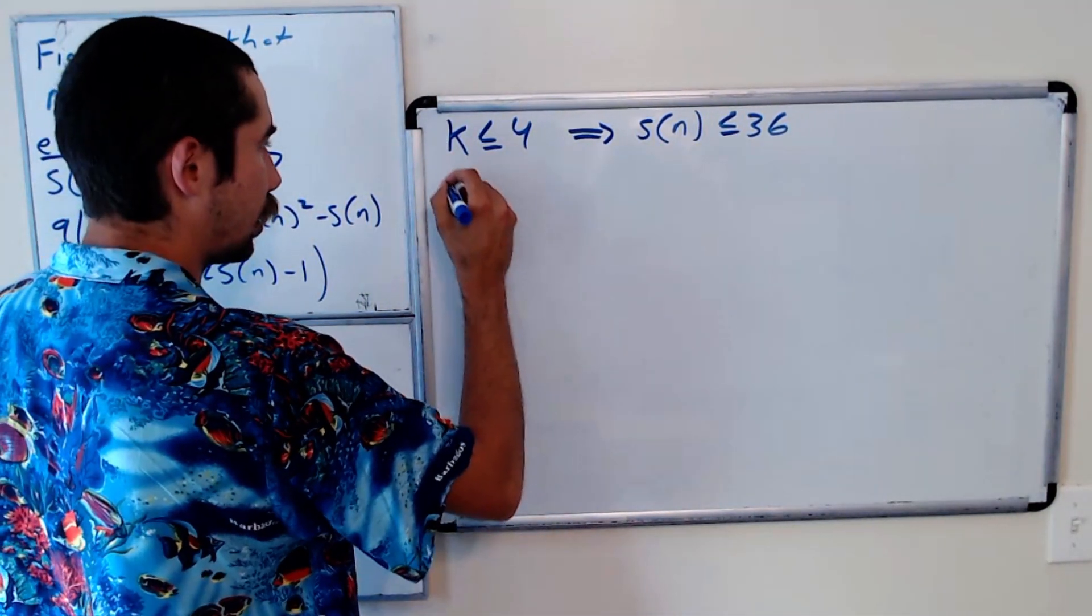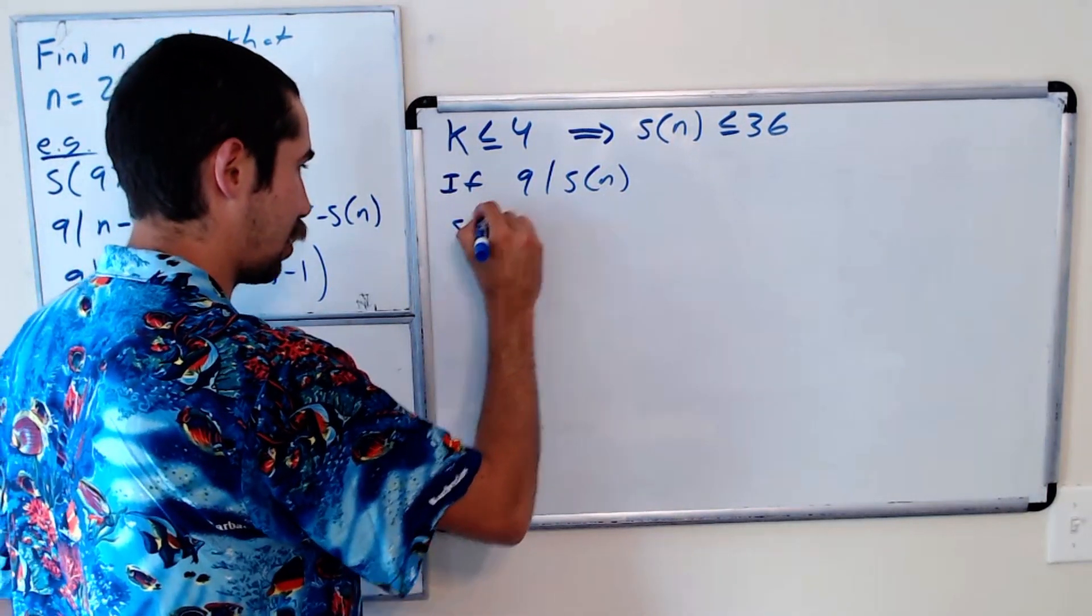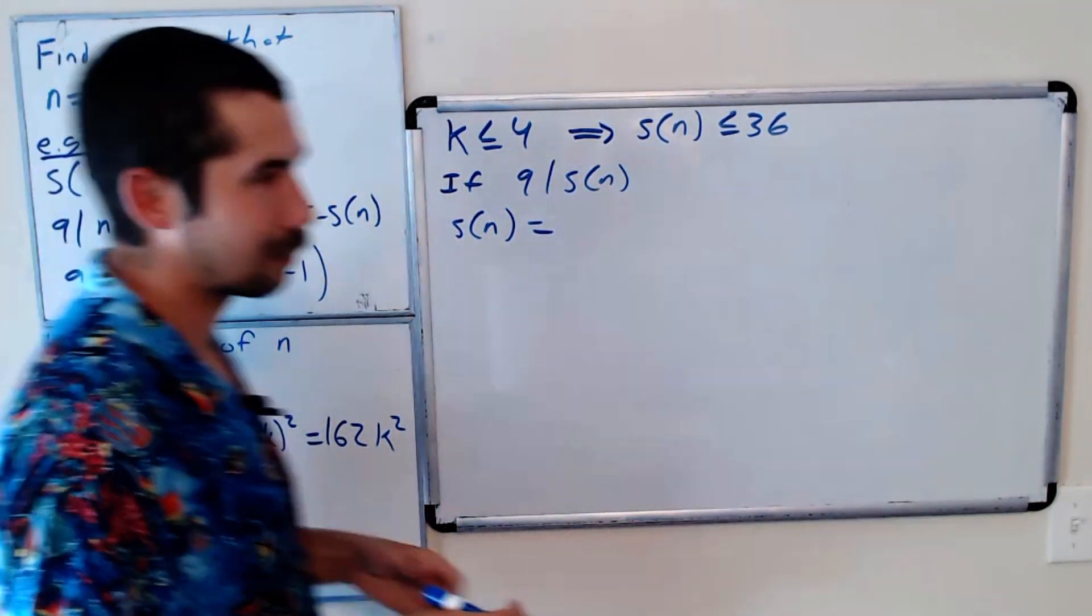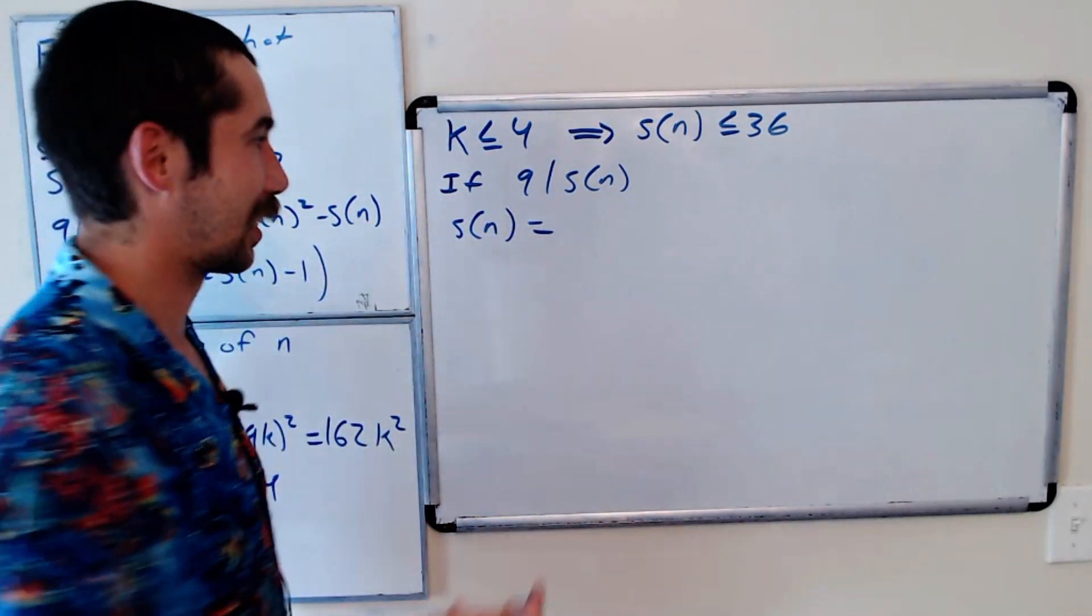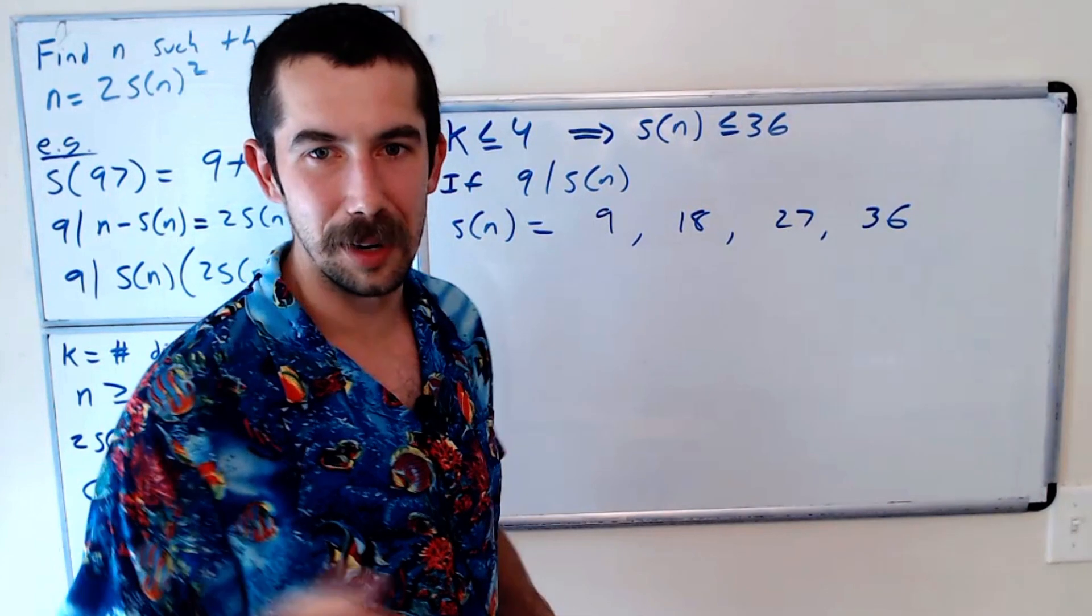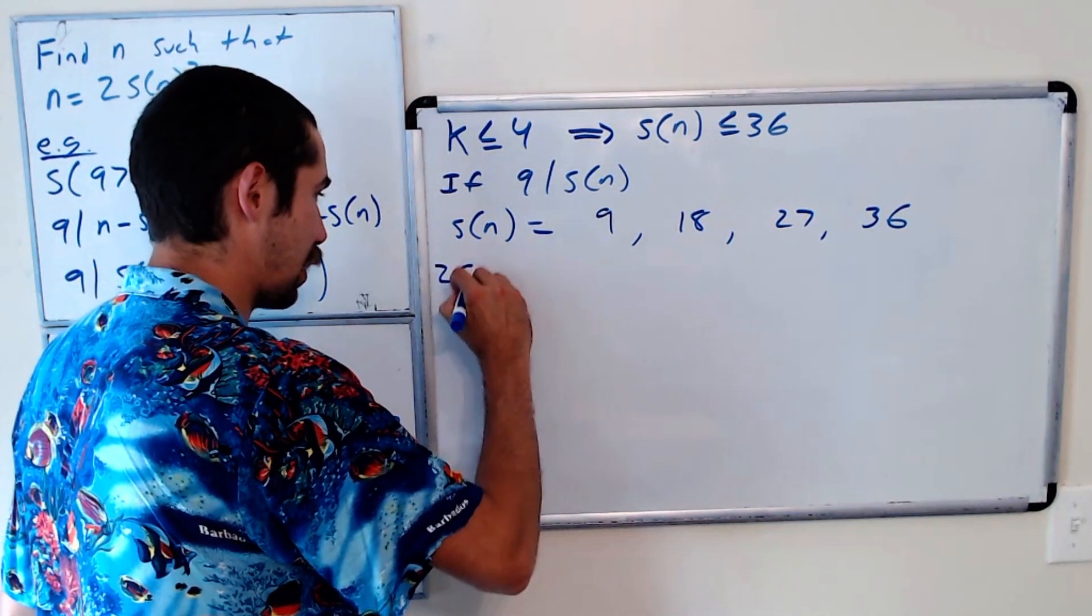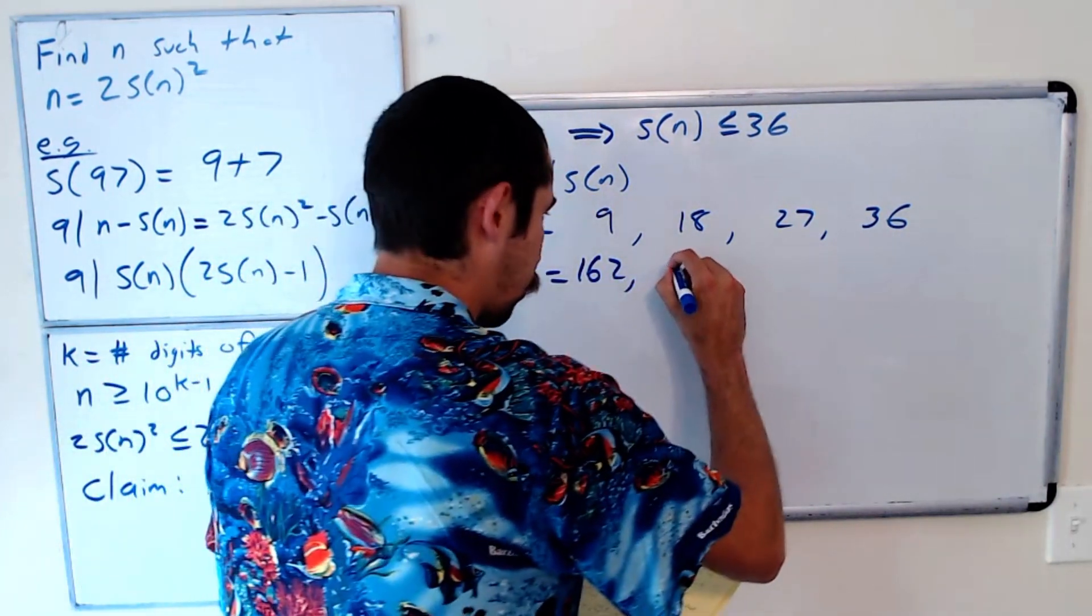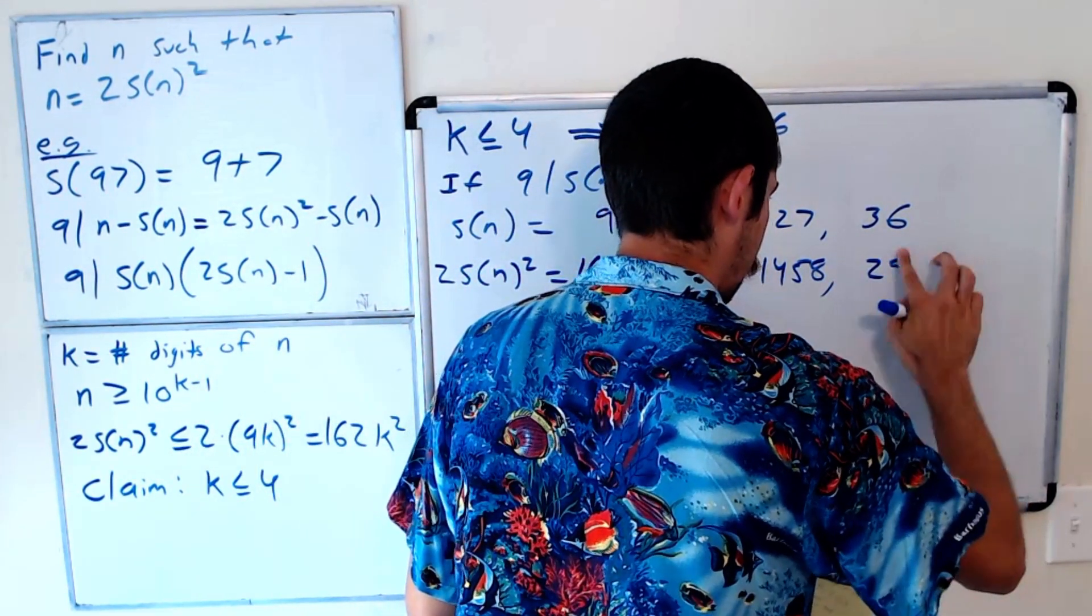Let's check if 9 divides S(n). What are the possible values of S(n)? Well, I mean, I guess it could be 0. 0 satisfies this, but let's say we're looking at positive numbers. It could be 9, 18, 27, or 36. So we have 9, 18, 27, or 36. This should be positive numbers that satisfy this. If S(n) is equal to these values, then 2S(n)² would be, well, I worked this out off camera: 162, 648, 1458, and 2592.